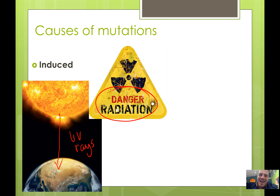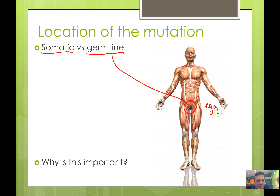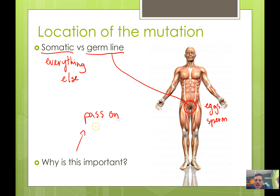The location of a mutation is very important — and by location we mean location on our body. There are two kinds: somatic cell mutations and germline mutations. Germline mutations happen in your reproductive cells — specifically the cells that make eggs and sperm. Somatic cells are everything else. If you're getting a mutation in your germline, you're going to pass on that mutation. So you pass on germline mutations, and this is what drives evolution.